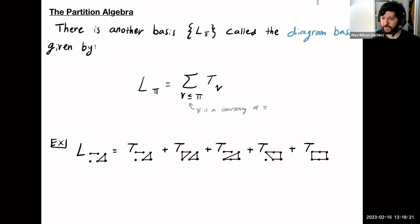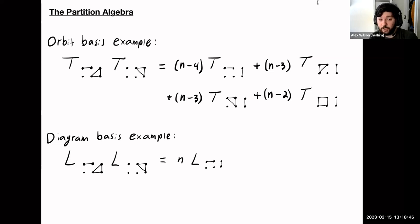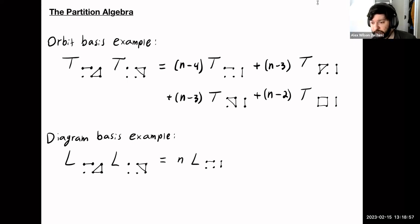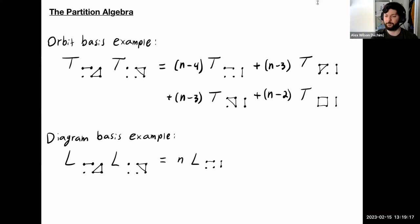So we now have the diagram basis. The reason we want to introduce it becomes clear in this next example. This is an algebra, so we should be able to multiply things — either as matrices or as compositions of endomorphisms. For the orbit basis, if we multiply two diagrams, we get a mess with factors like n minus 4, n minus 3, n minus 2. But if we use the diagram basis, we get something much closer to that monoid structure I promised at the start: a much nicer product that's more intuitive and predictable, drawing more on the combinatorics of the diagrams.